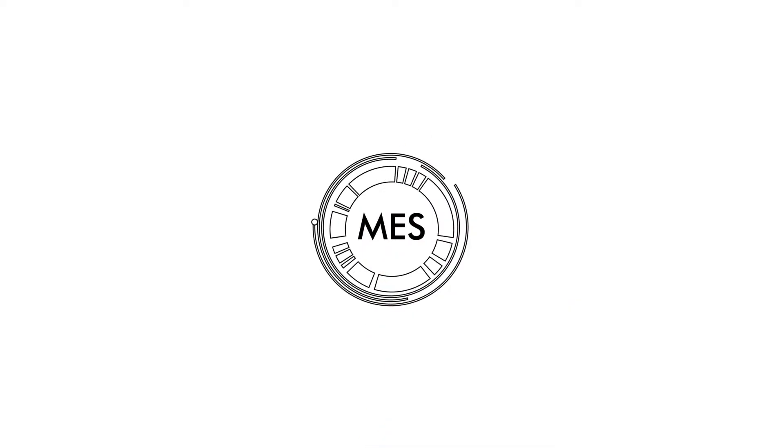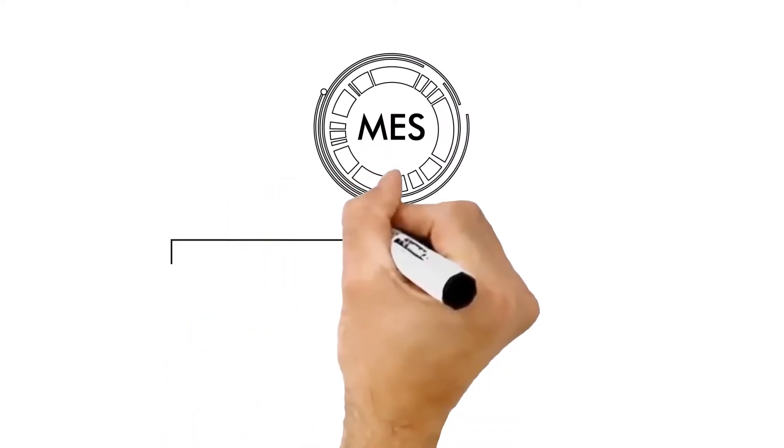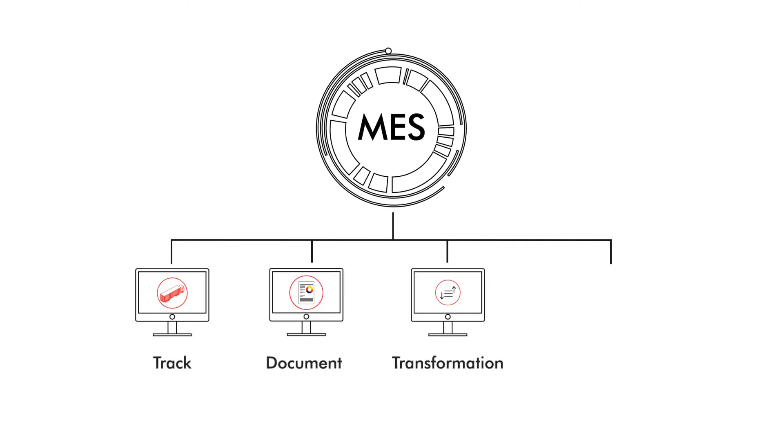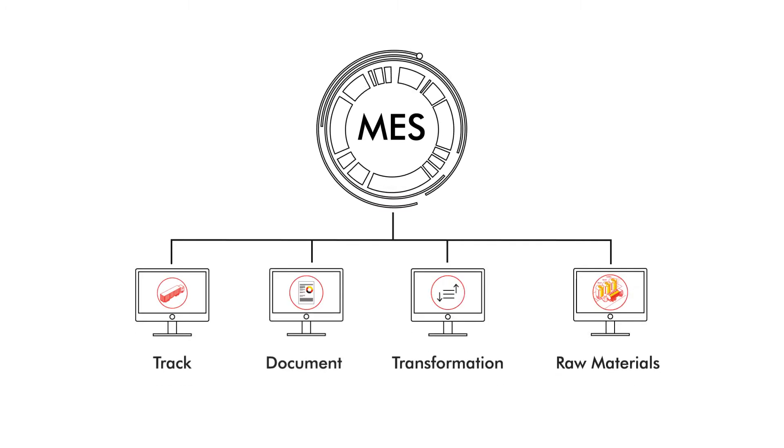A Manufacturing Execution System, MES, is a digital system that connects, monitors, and controls production operation systems, and it is used to track and document the transformation of raw materials to finished goods.